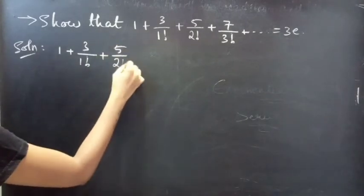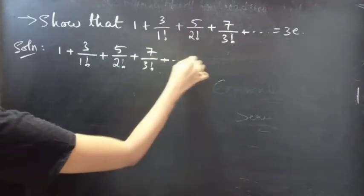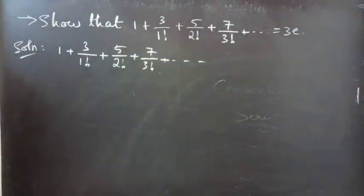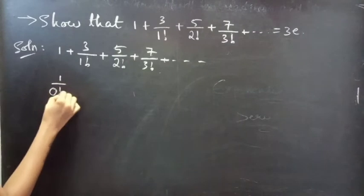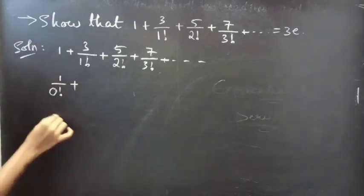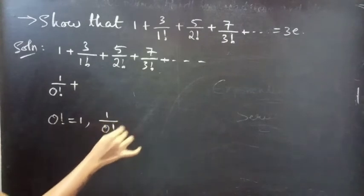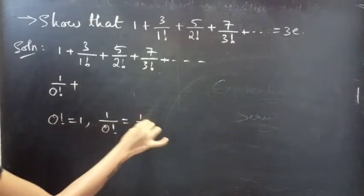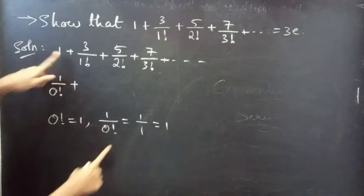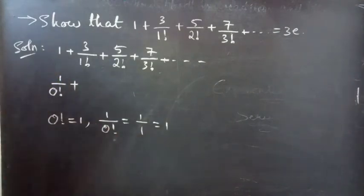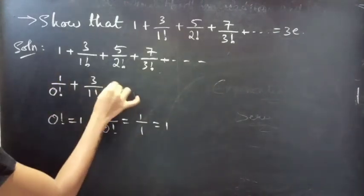You can write the first term 1 as 1/0!, since 0! equals 1, then 1/0! equals 1/1 which equals 1. So you can replace this 1 by 1/0!, giving 1/0! + 3/1! + 5/2! + 7/3! + and so on.